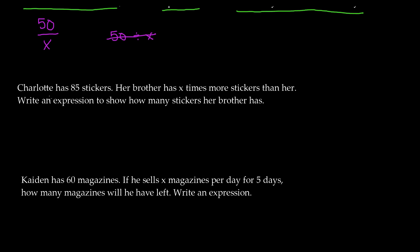The second-to-last problem: Charlotte has 85 stickers. Her brother has x times more stickers than her. Write an expression to show how many stickers her brother has. We know she has 85 stickers and her brother has x times more — we don't know the exact multiplier, but we write 85x. For example, if he has 2 times more, we'd multiply 85 by 2. So the expression is 85x.